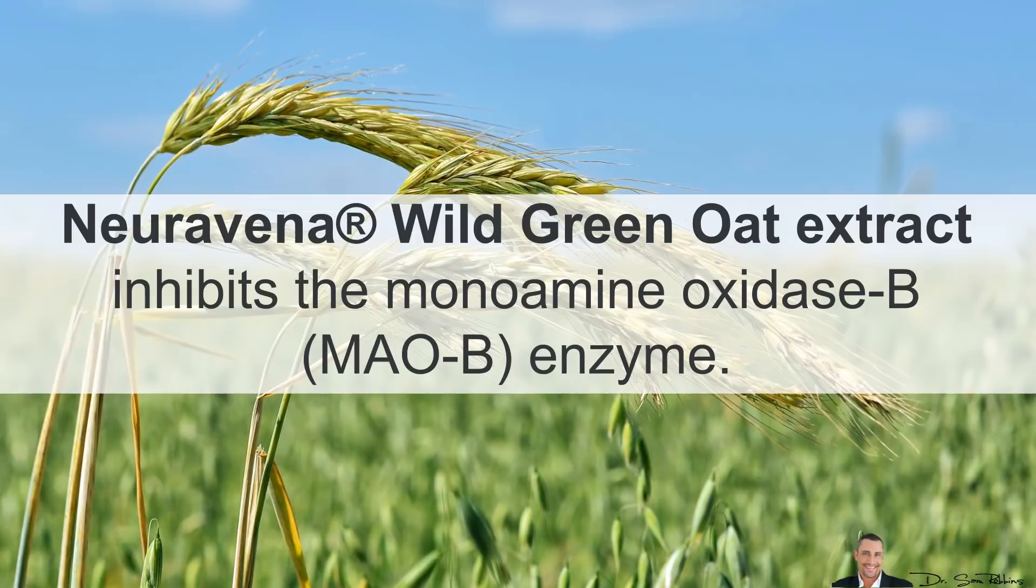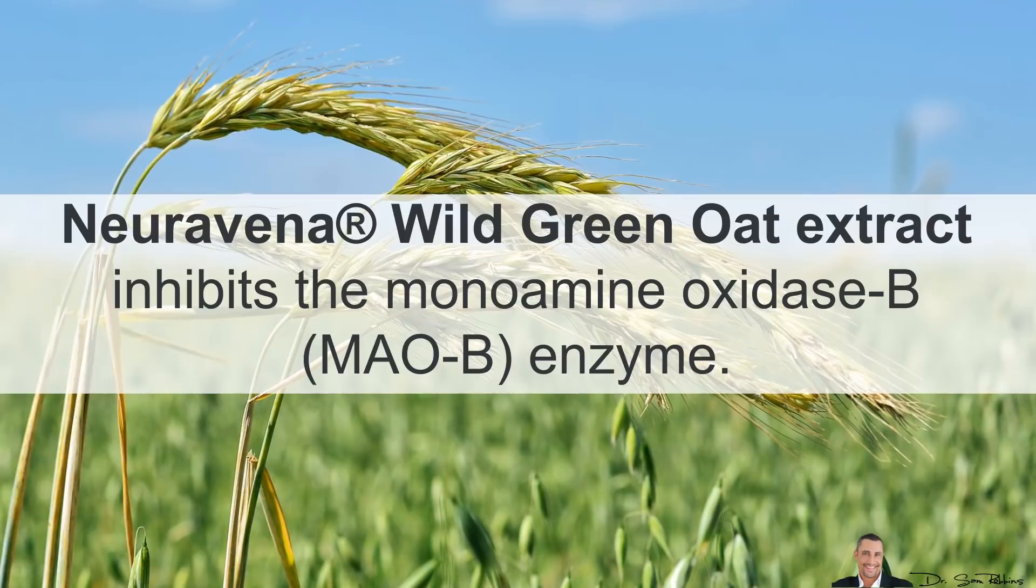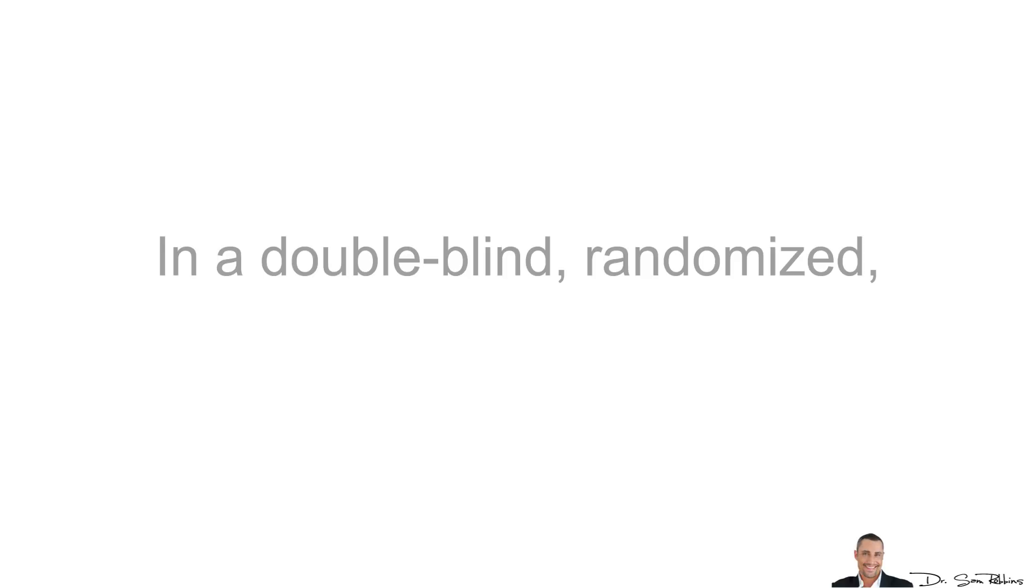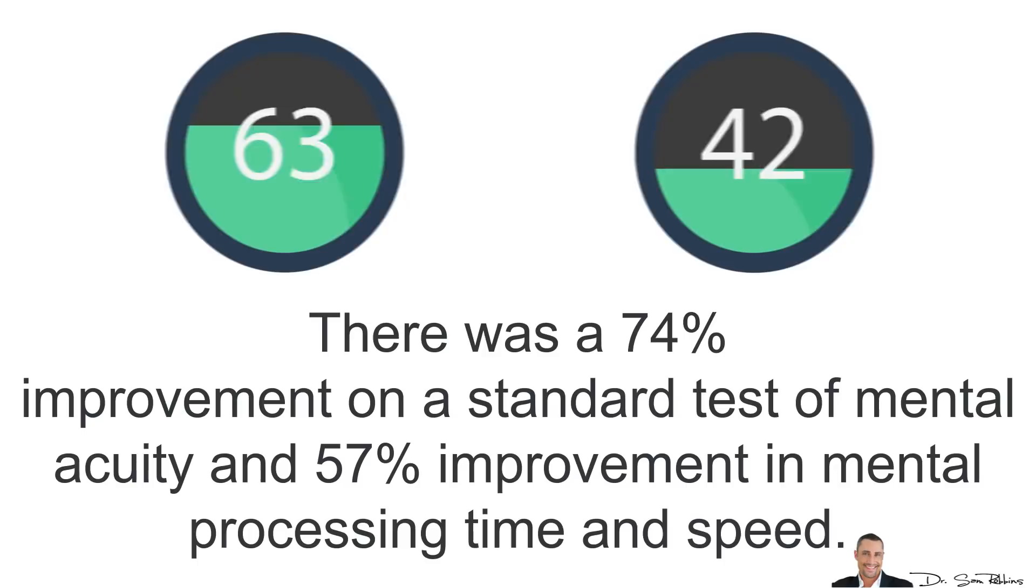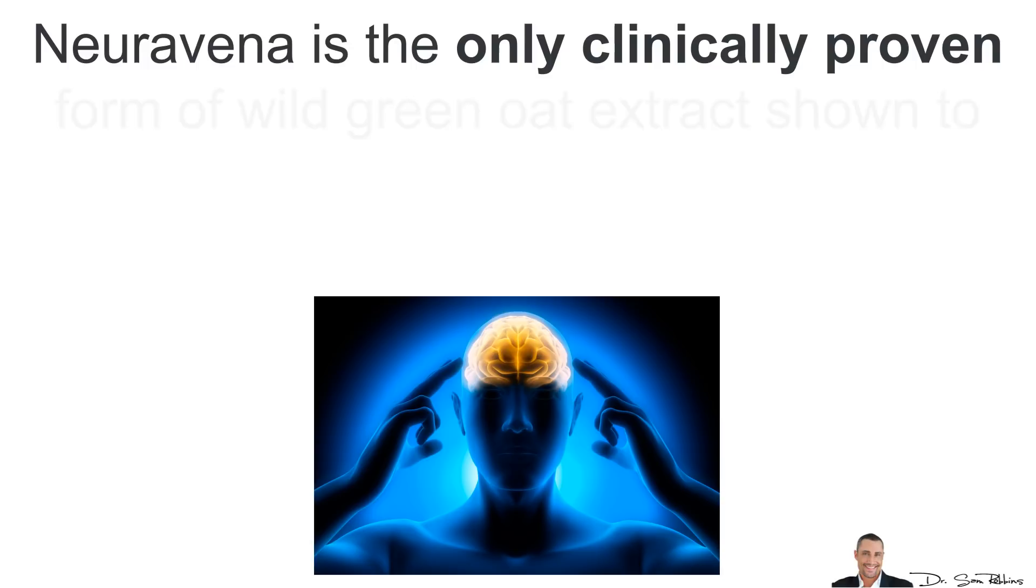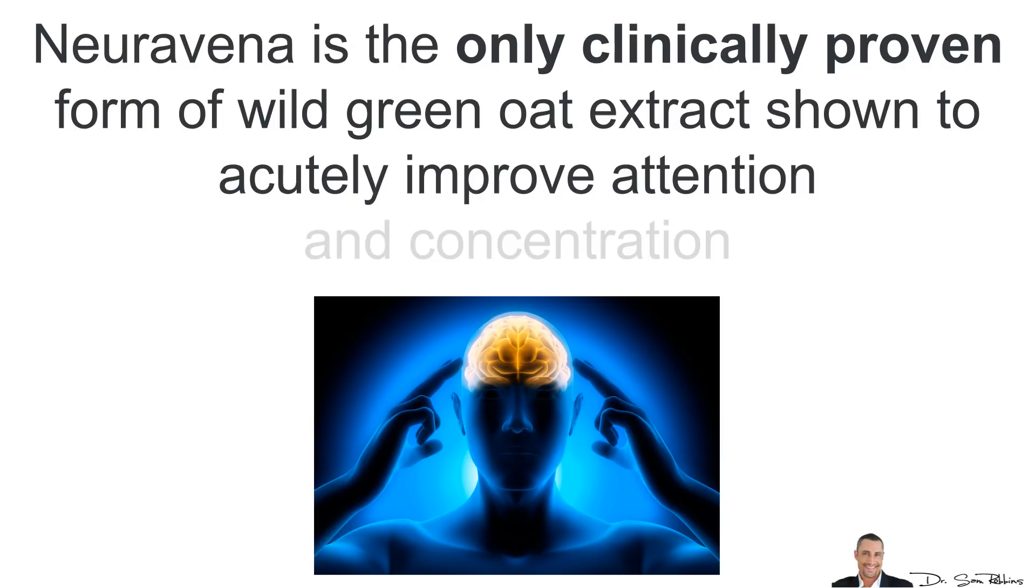The next one is Wild Green Oat Extract. This inhibits the monoamine oxidase B, which is also MAO-B enzyme. This is important because age-related decline in dopamine is largely caused by rising levels of MAO-B. In a double-blind randomized placebo-controlled trial, there was a 74% improvement on a standard test for mental acuity and 57% improvement in mental processing time and speed.